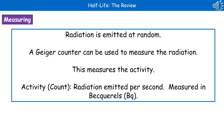Welcome to our review on Half-Life. First thing we need to remember is when we're talking about radiation, this is emitted at random. So we use a Geiger counter to measure the radiation, and that's actually going to give us a count called the activity.